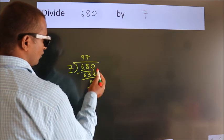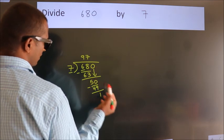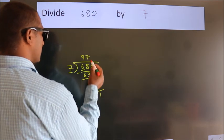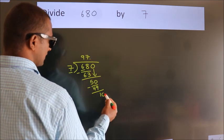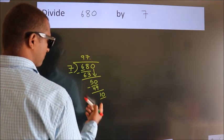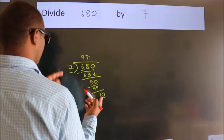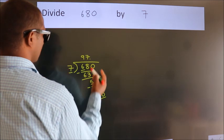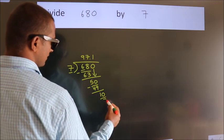After this, no more numbers to bring it down. So what we do is, we put dot, take 0. So 10. A number close to 10 in 7 table is 7 1s, 7.